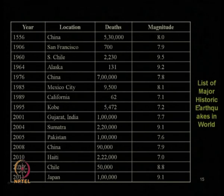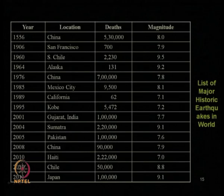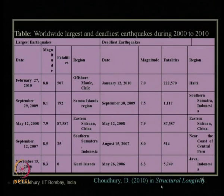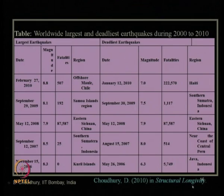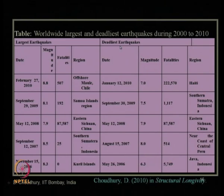We have seen a list of major historic earthquakes around the world. The latest one mentioned is the 2011 Japan earthquake, where the number of deaths was more than one lakh as per official record and the magnitude was 9.1. We also discussed the world's largest and deadliest earthquakes during the period 2000 to 2010. It is not necessary that the largest or maximum magnitude earthquake is the deadliest one, causing maximum loss of life and property.